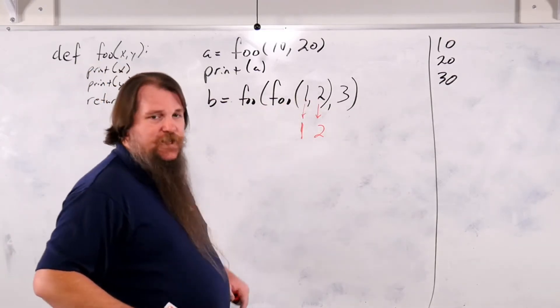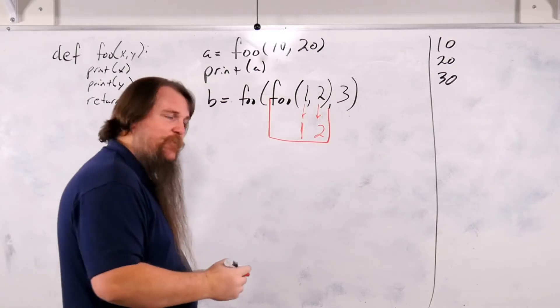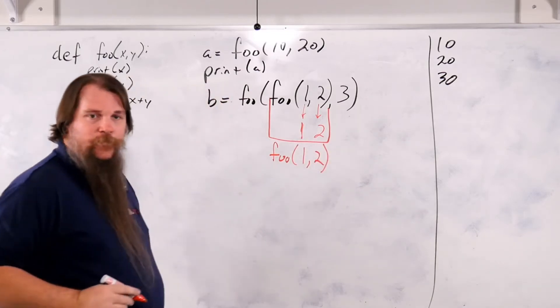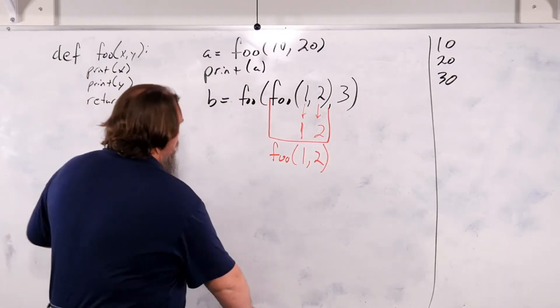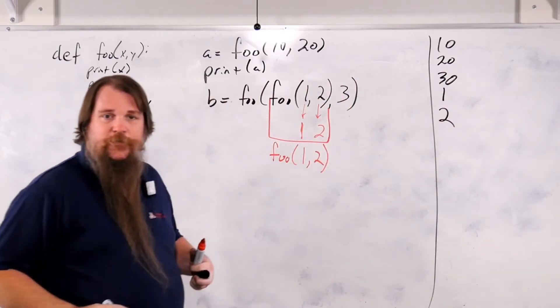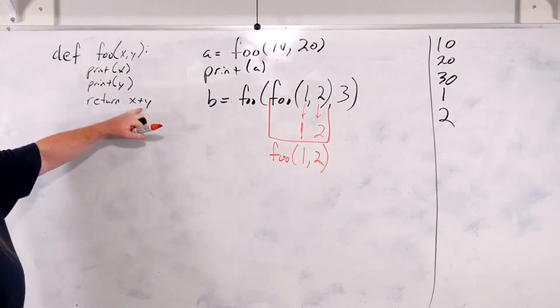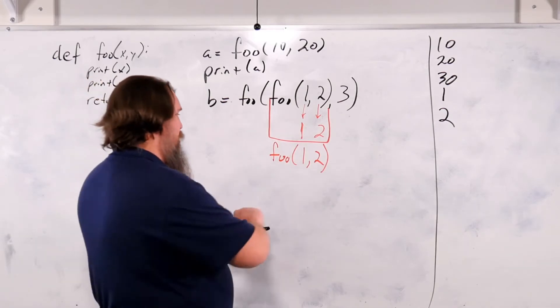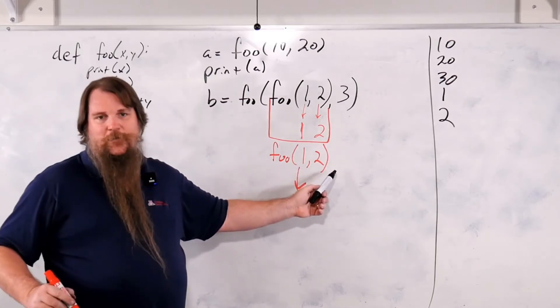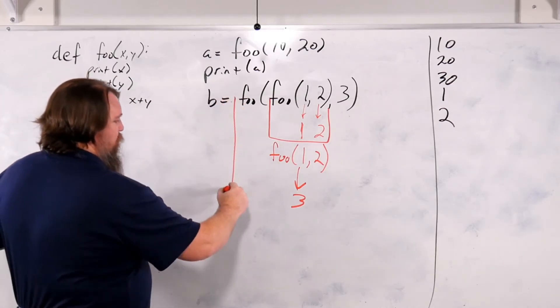But it figures out, okay, one and two. Now we have the two parameters necessary for a foo call. So now what it's going to do is it's going to execute this foo call. It's going to call foo of one, two. Alright, so what happens? Foo will run, it will print out one, it will print out two. And then what is returned from this? It returns one plus two. Okay, so it returns the value three. So it was foo one comma two, but now three is the value that we've got here.